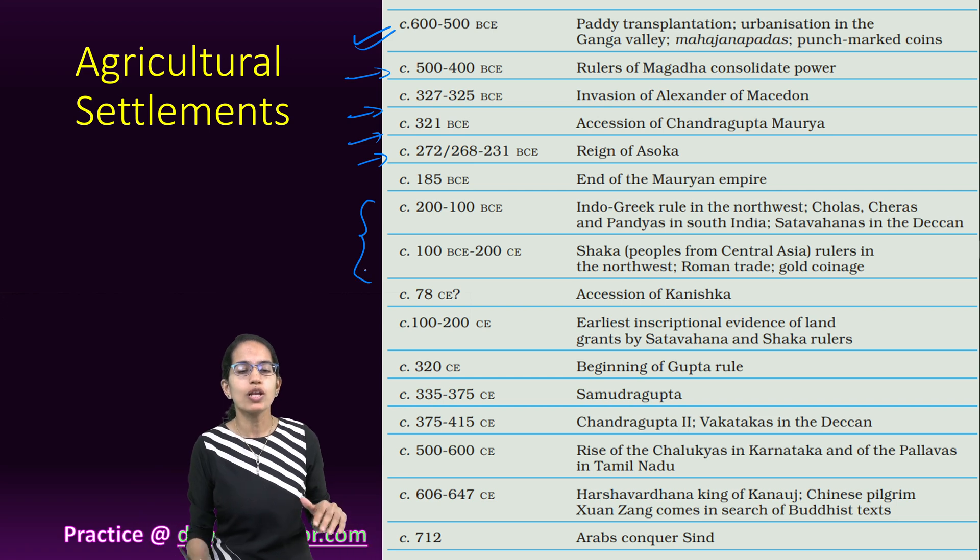Pataliputra was important because it was built on the river route of the Ganga, making it an important center of trade. The Mauryan Empire was founded by Chandragupta Maurya. During its early phase it covered mainly the north — regions of Afghanistan and Baluchistan. During Ashoka's time, it expanded south to the region of Kalinga. After the Kalinga war, Ashoka adopted Buddhism and was sorrowful about the penance of war. Kalinga in the coastal regions of Odisha was the extension during the Ashokan period.